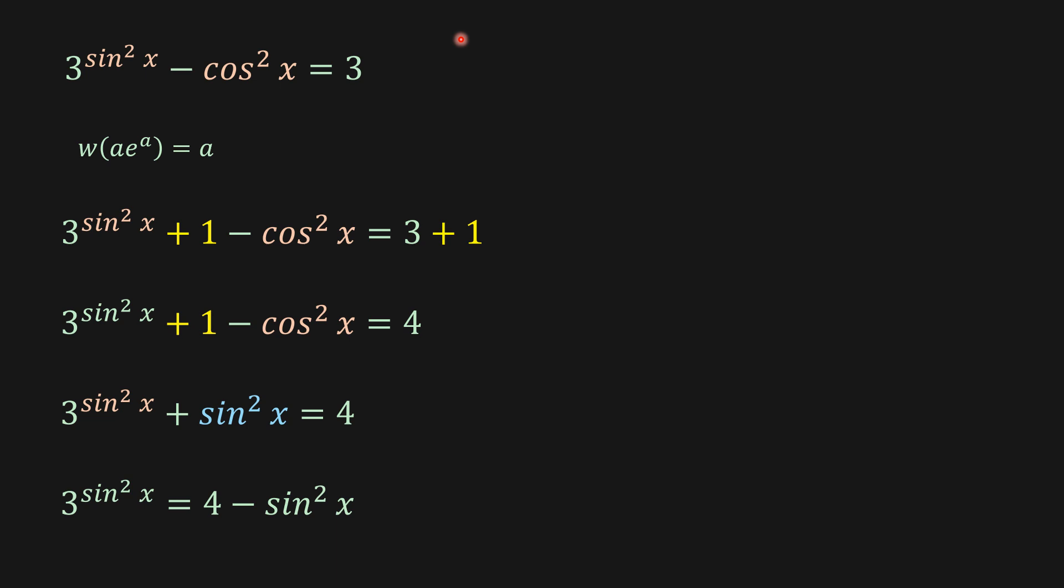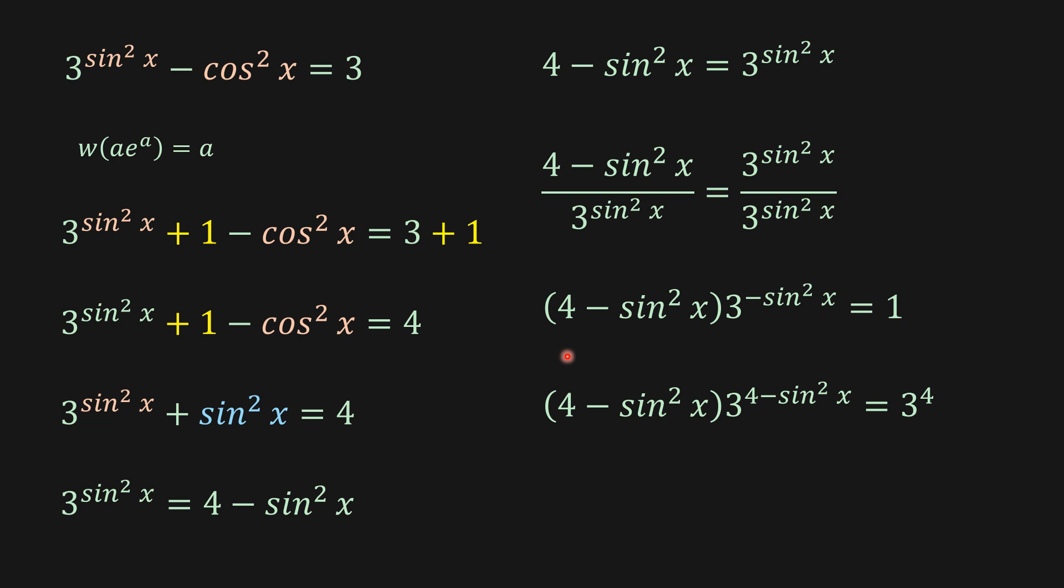Now I'm going to send sine squared x to the right side of the equation, and then flip the equation, and then dividing both sides by 3 to sine squared x. And then from here, we are going to multiply both sides by 3 to the 4, because we have 4 here. So multiplying both sides of the equation by 3 to the 4, we're going to have this one here.